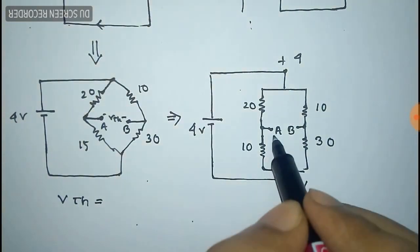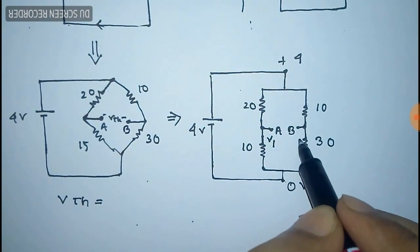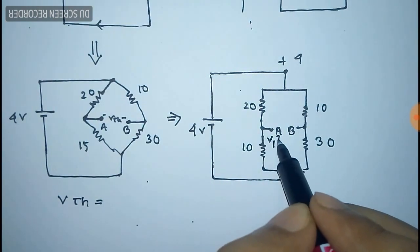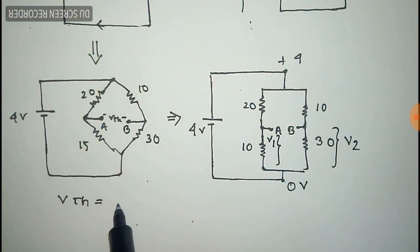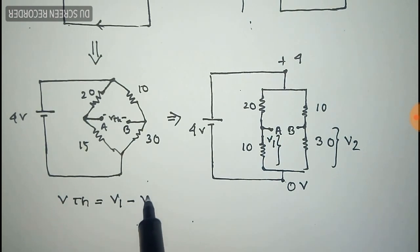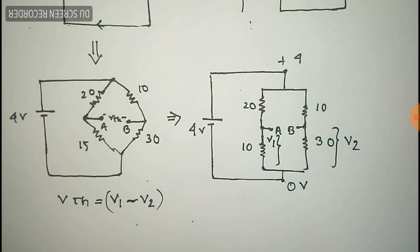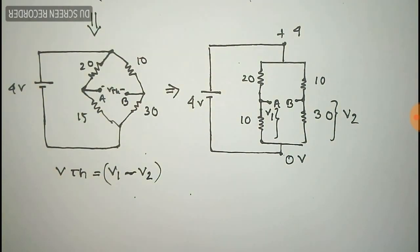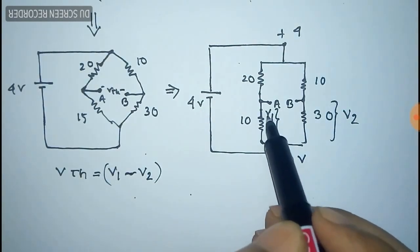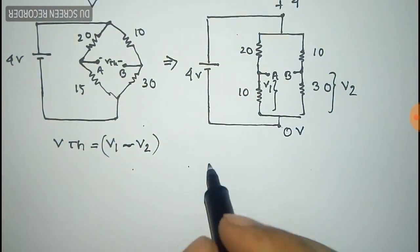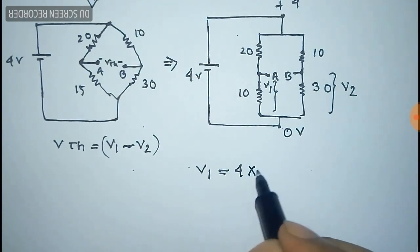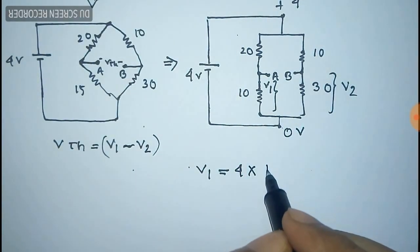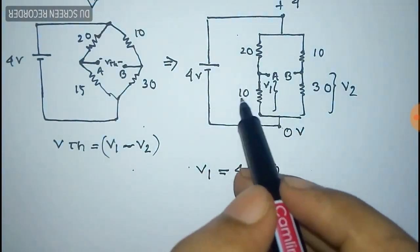The Thevenin voltage is equal to V1 minus V2, where V1 is the voltage across the 10 ohm resistance and V2 is the voltage across the 30 ohm resistance. V1 is equal to 4 volts multiplied by the resistance divided by the sum of the two resistances — using the voltage divider rule, total voltage into the resistance by the sum of the two resistances.